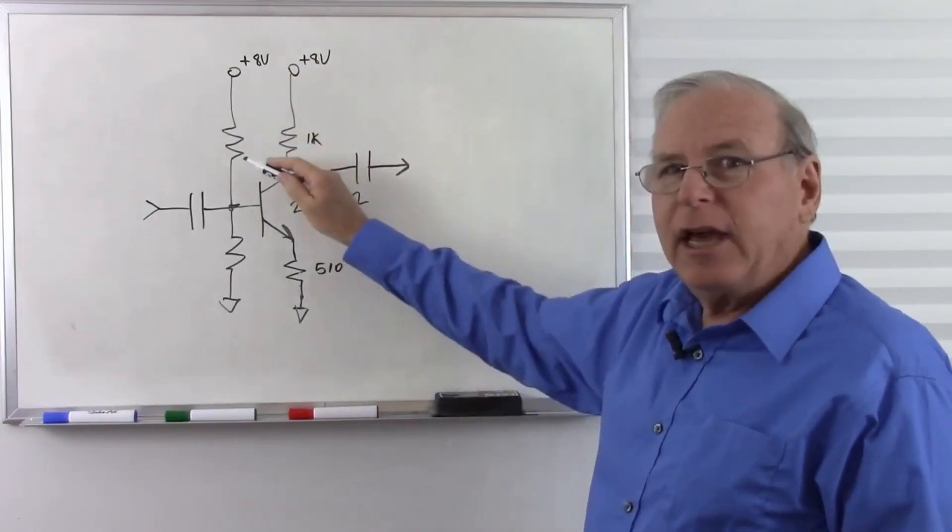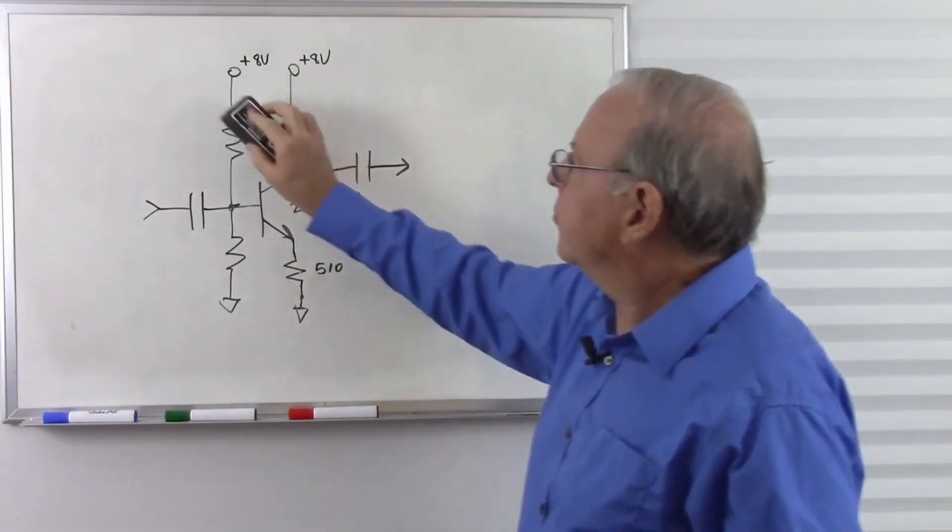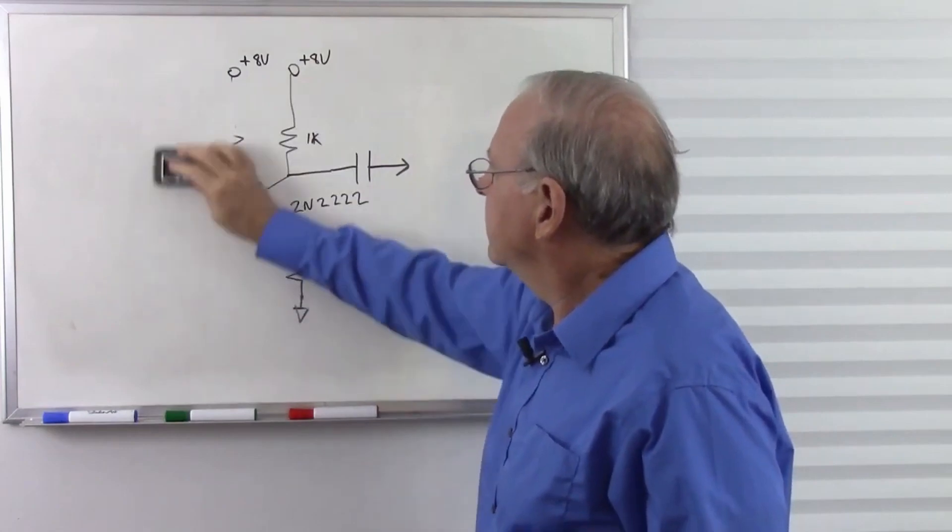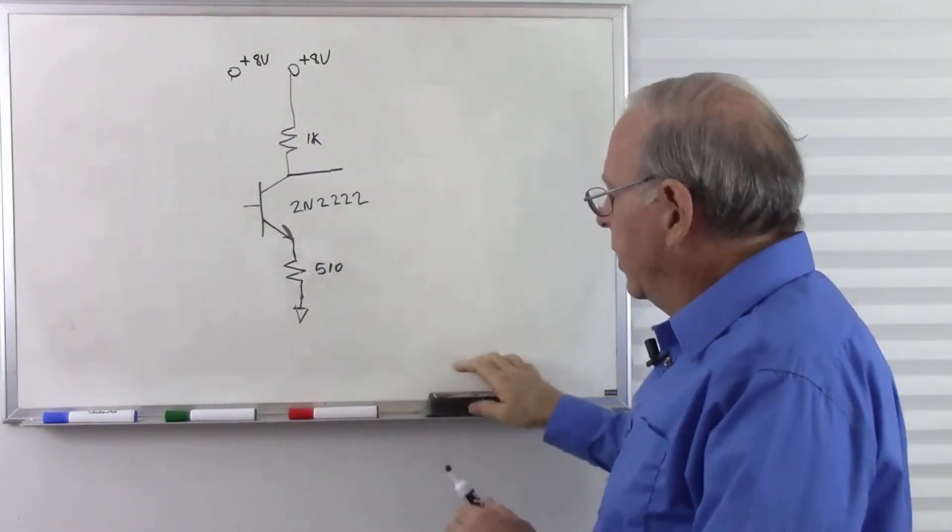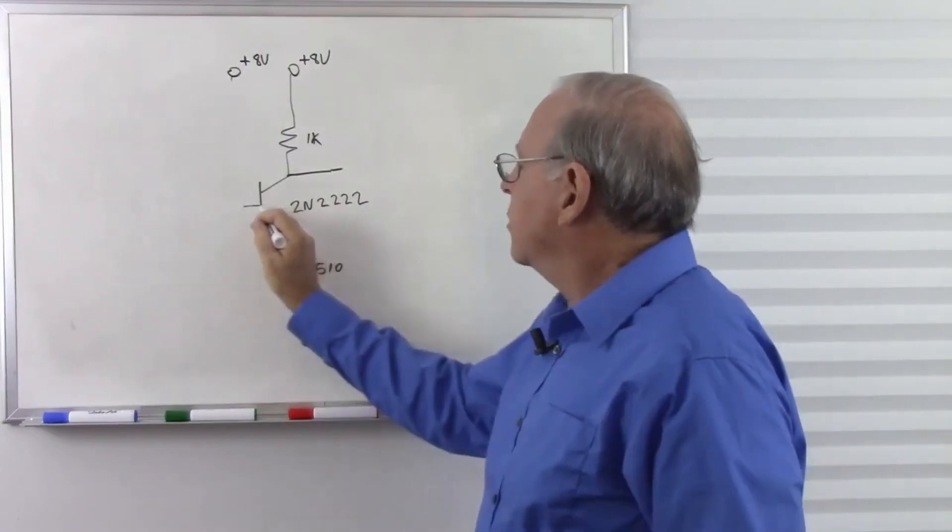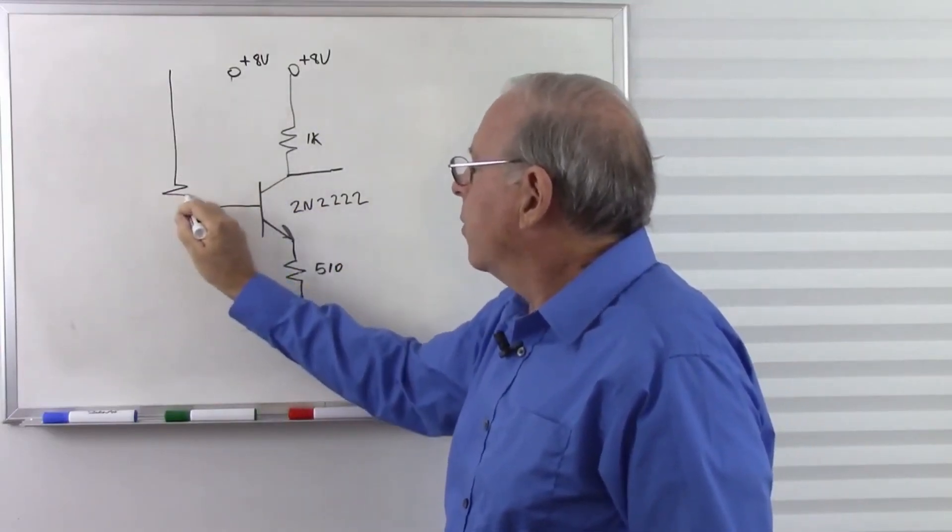So let's start by using a 20k potentiometer in place of these two resistors.